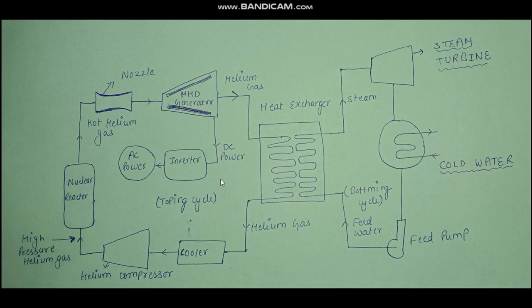This is the whole diagram of the closed cycle seeded inert gas energy system. I will explain its working step by step. The helium gas is seeded with cesium and heated to very high temperature in a nuclear reactor. The hot helium gas is then passed through a nozzle so that its velocity increases, and this gas is supplied into the MHD duct, where it produces DC power.